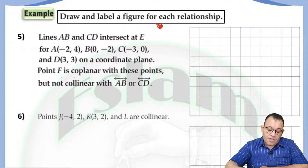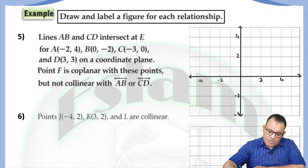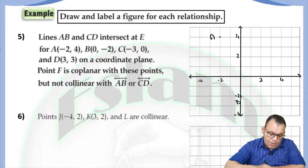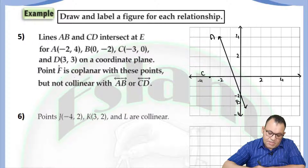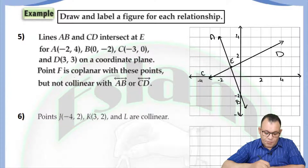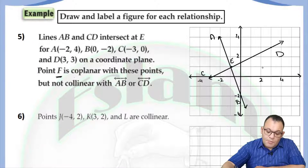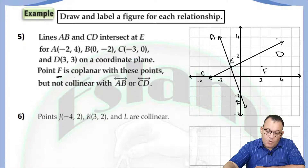In this problem, we need to draw and label a figure for each of the following relations. The first relation: line AB intersects line CD at one point, which is E. The first point is negative 2 and 4 — that will be point A. The second point is 0 and negative 2 — that will be point B. Then we draw the line passing through the two points. The second line is CD: the first point is negative 3 and 0, and the next is 3 and 3. Then we draw line CD. The two lines intersect at one point, which is E. We also need to graph point F, which is coplanar with lines AB and CD — lies on the same plane — but not collinear with them, so we can put point F at any place that lies on the same plane but not on line AB or line CD.